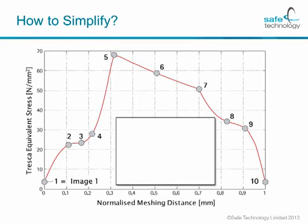If we focus on a single tooth in a meshing — with meshing being the noun describing two gear teeth coming into contact, rather than a finite element mesh — then we will start out with image one and look at the tensile side of the tooth marked with a yellow circle with a black dot in it.